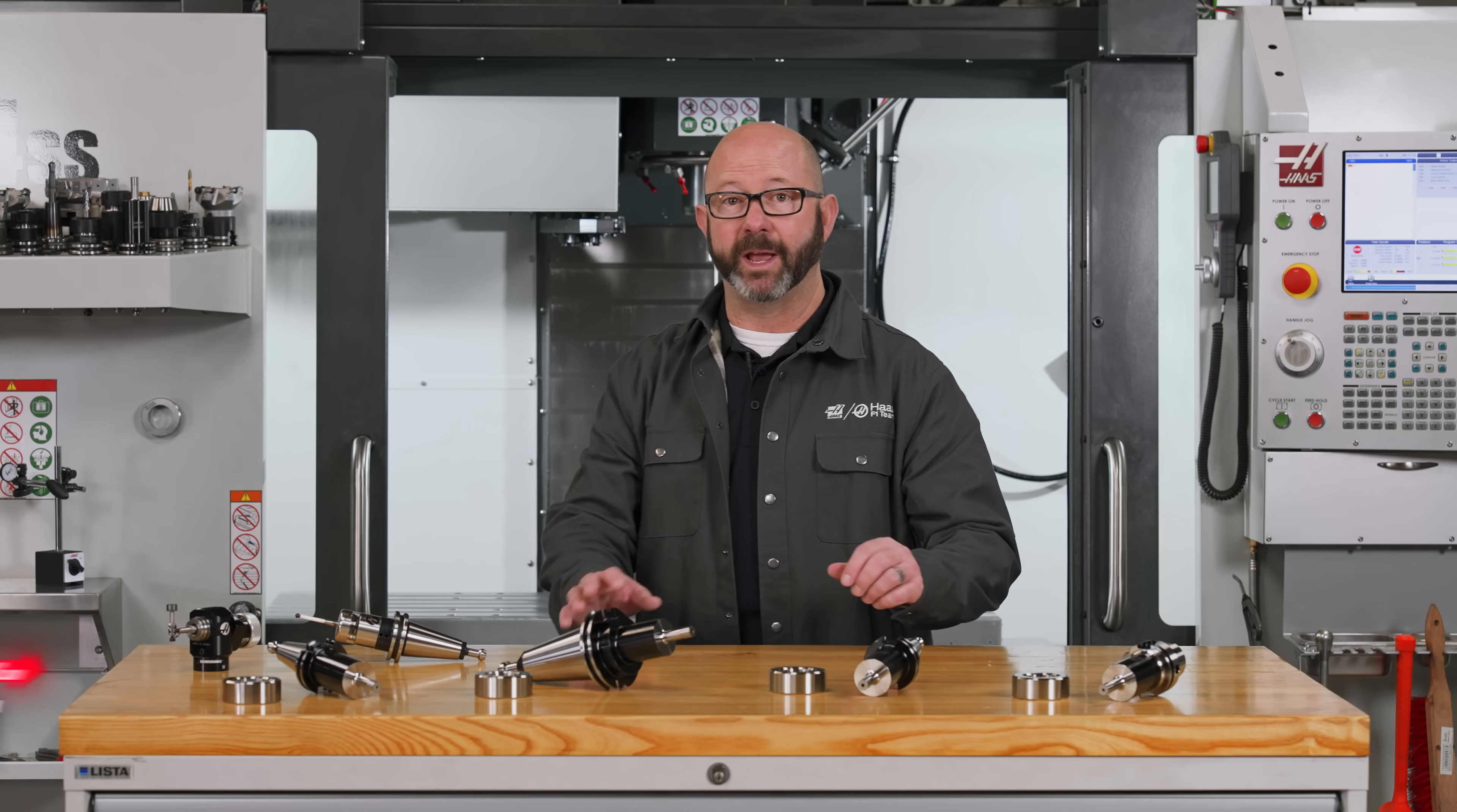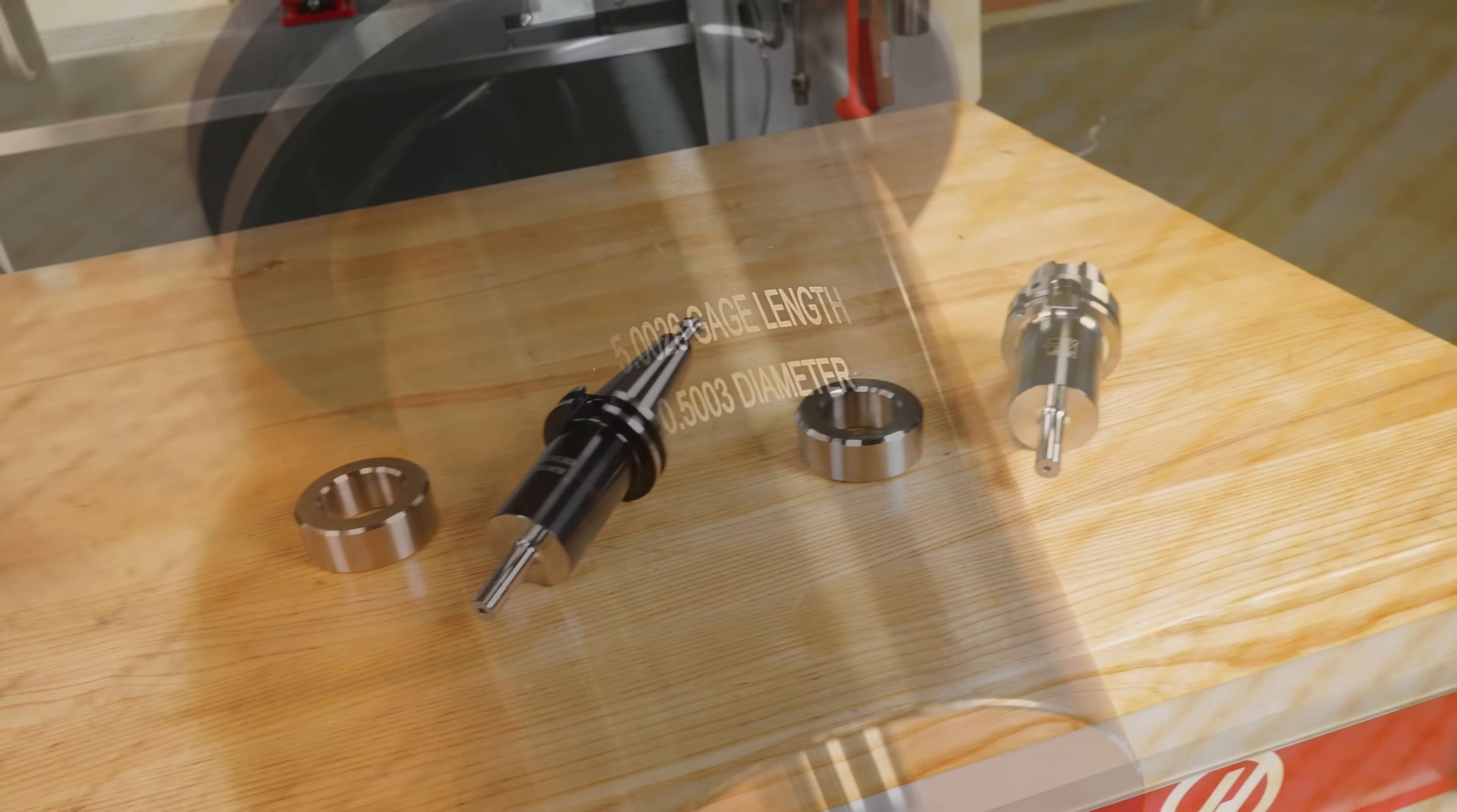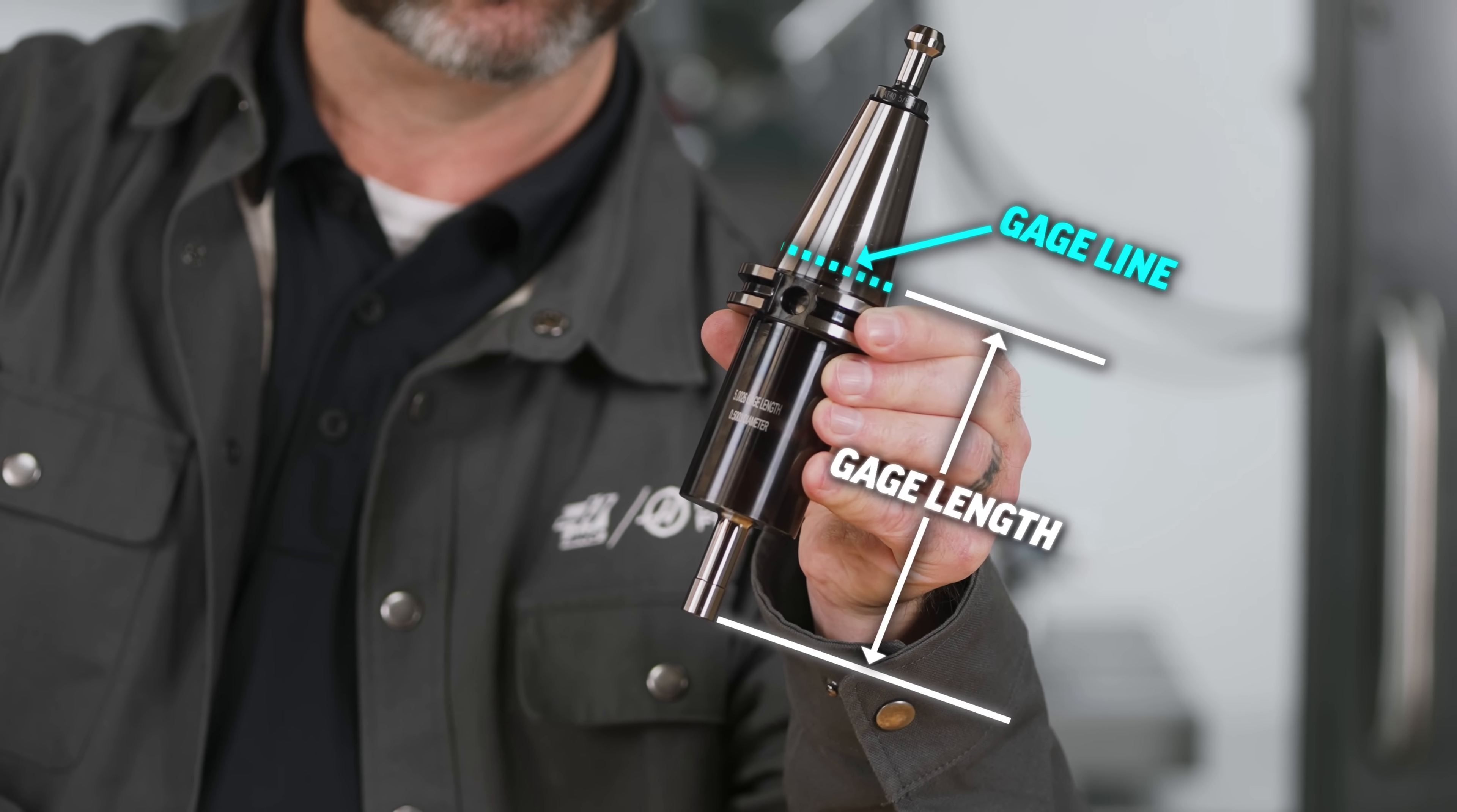And the easiest way to calibrate is with one of these probe calibration kits. Now these are basically test bars built for probing. It is marked with a known length. This is a known gauge length, an exact distance from the tip of the tool to a theoretical gauge line that cuts through the tool's taper.